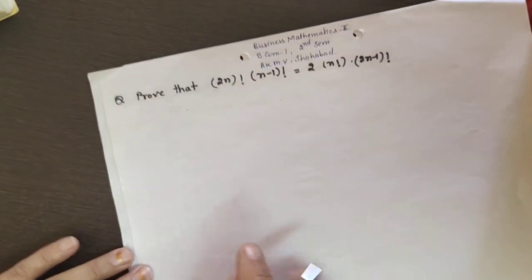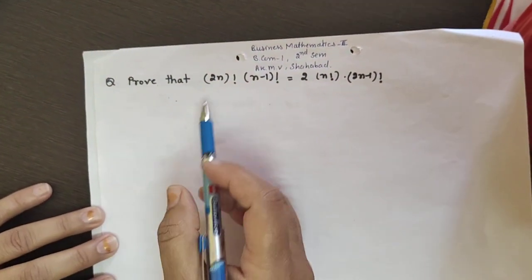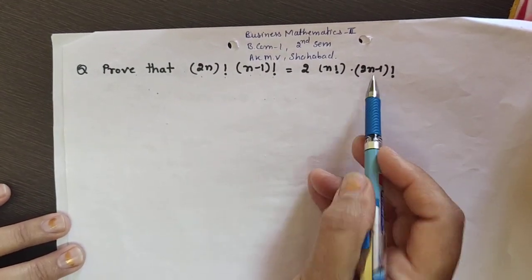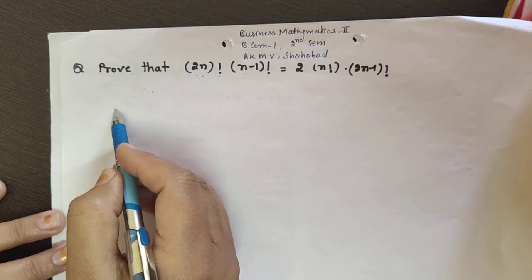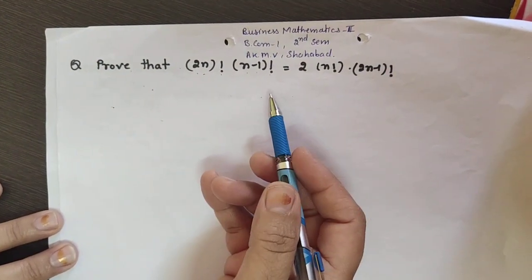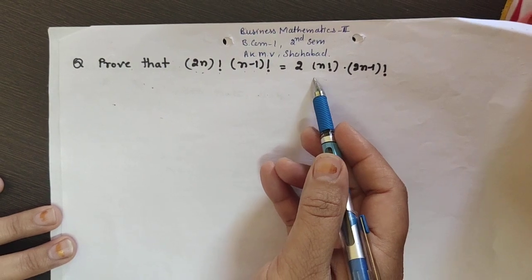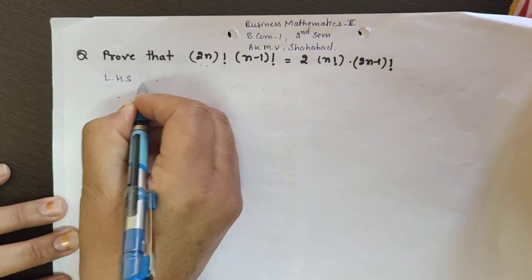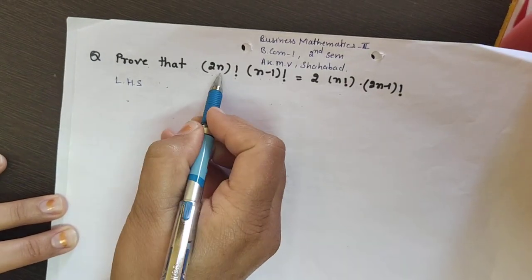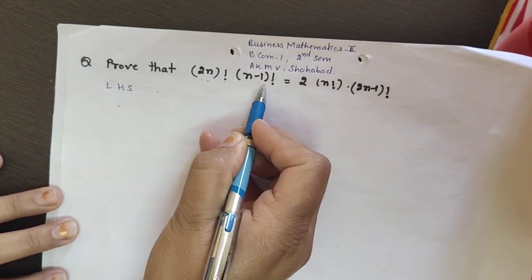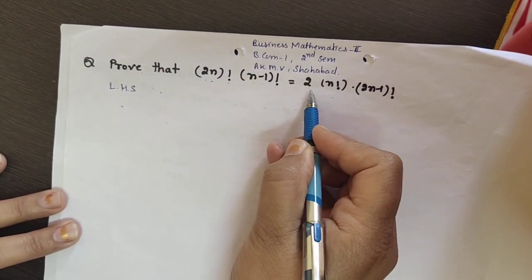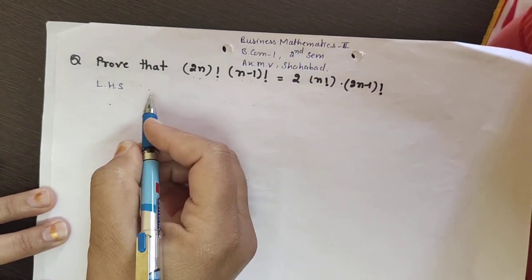We can also solve the next type of question from the book. This example involves (2n) factorial × (n−1) factorial. We take the left-hand side, simplify by applying the formulas, and calculate the right-hand side. Starting with the left-hand side: (2n)! × (n−1)!.